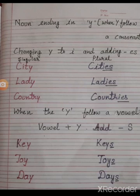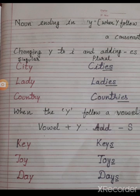Noun ending in Y. जब noun के end में Y आए और Y के just पहले consonant आए, तो आप Y को replace करके I लिख देंगे और ES को add कर देंगे।